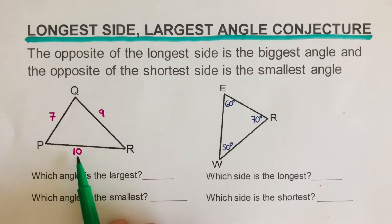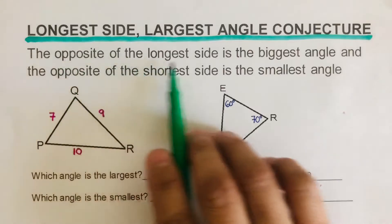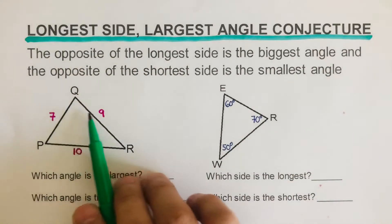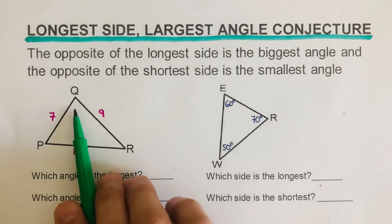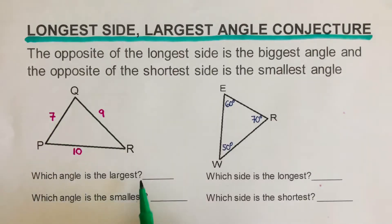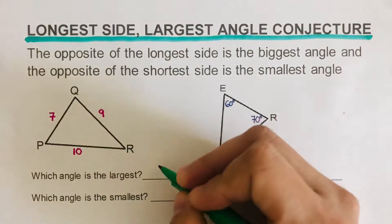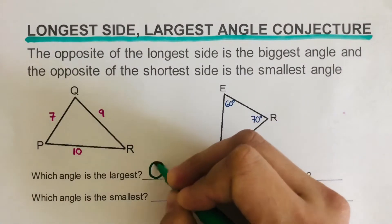It follows that whichever is the longest side, across from it is the largest angle. So 10 is the biggest side or the longest side over here. So this angle Q which is across from 10 is actually the largest angle. I can go ahead and say this is angle Q.